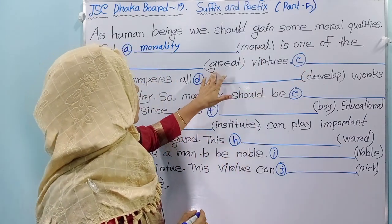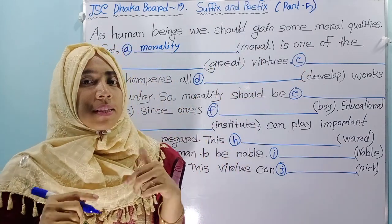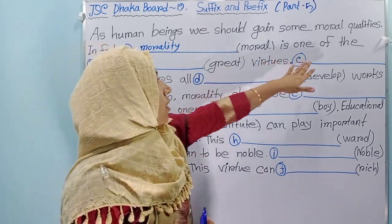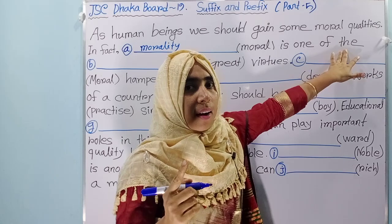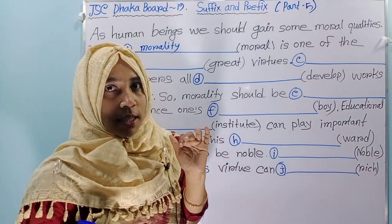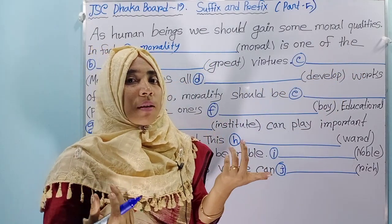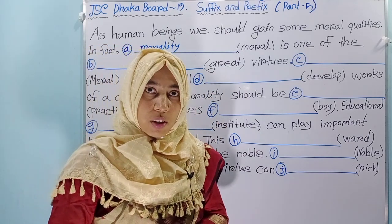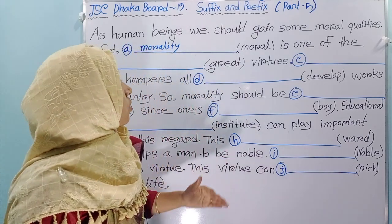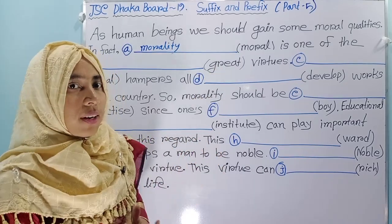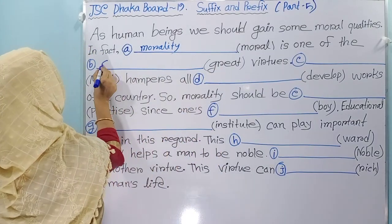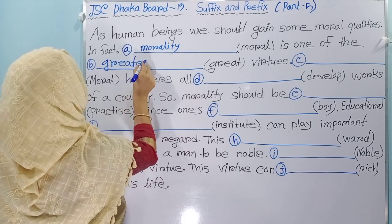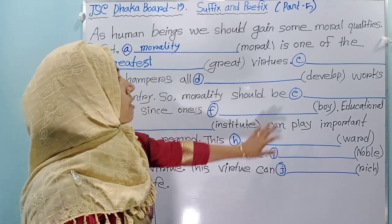Here you see 'great' — that means this is an adjective. If you see 'the' before any adjective, then you have to use the adjective in superlative form. So what is the superlative form of great? The superlative form of great is greatest. Greatest virtue.